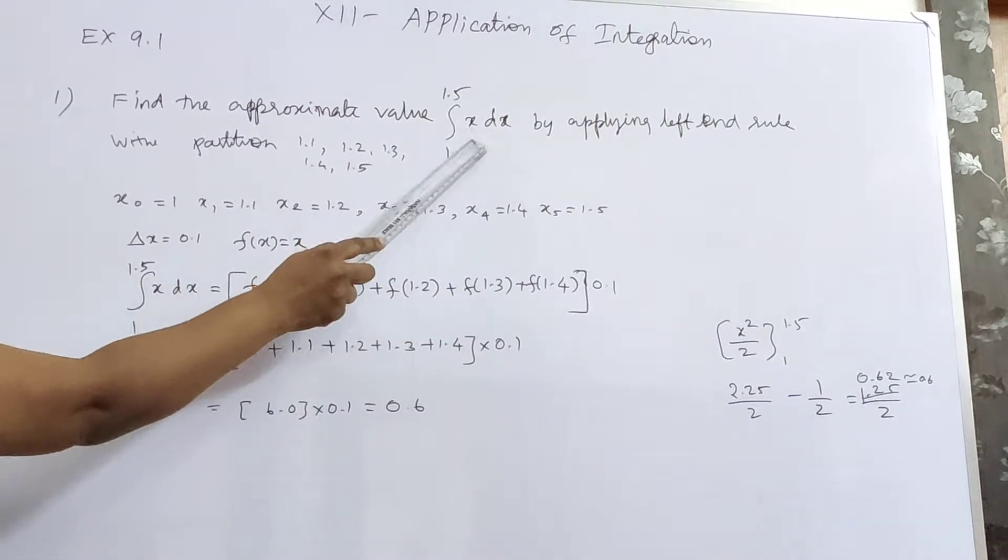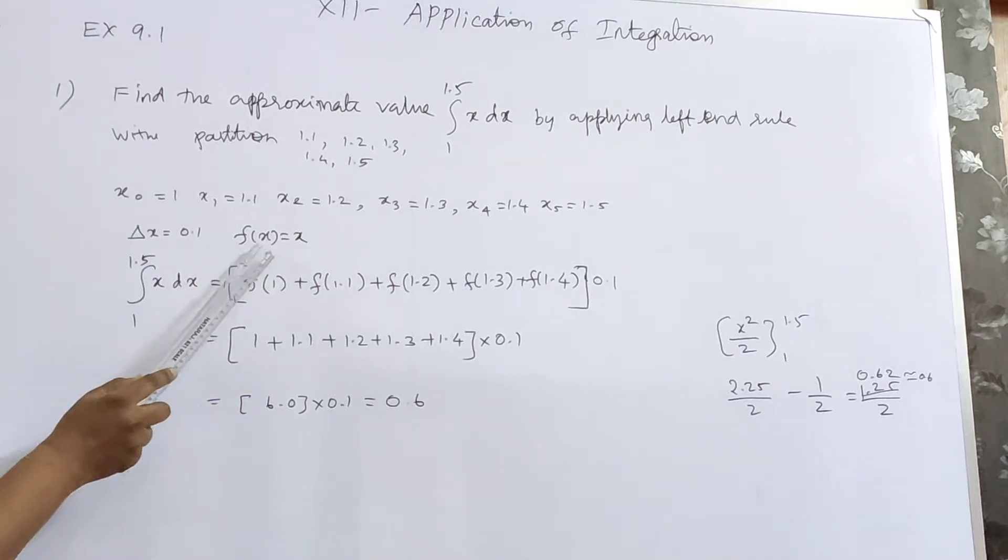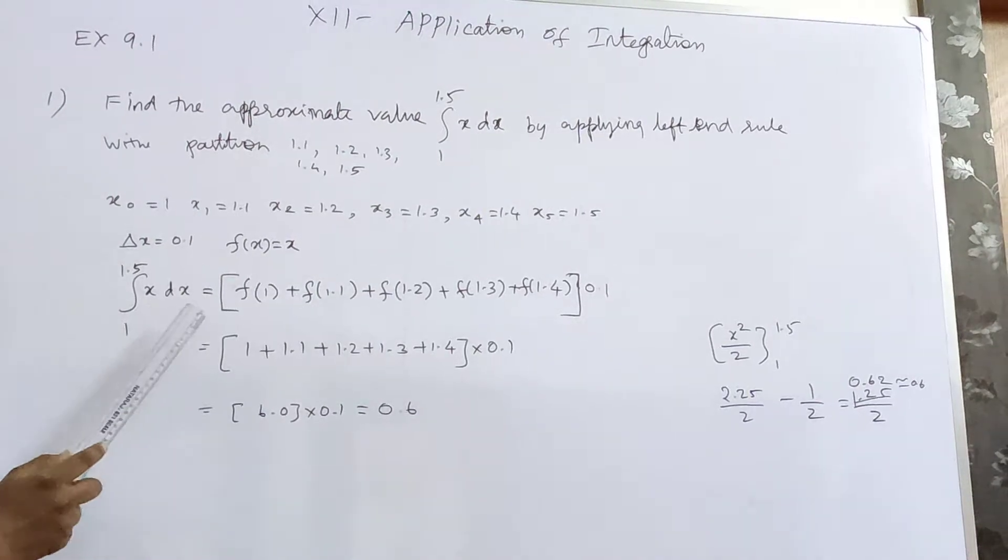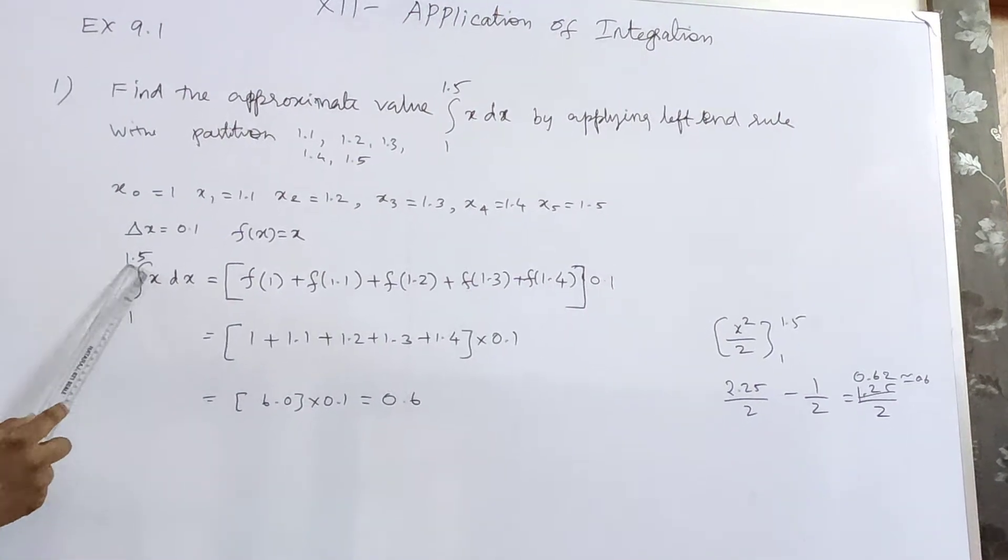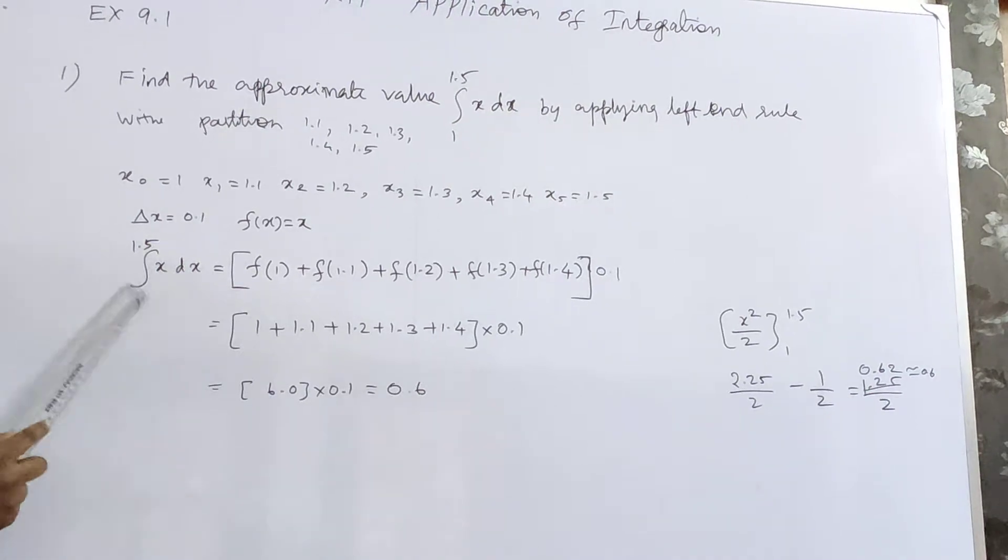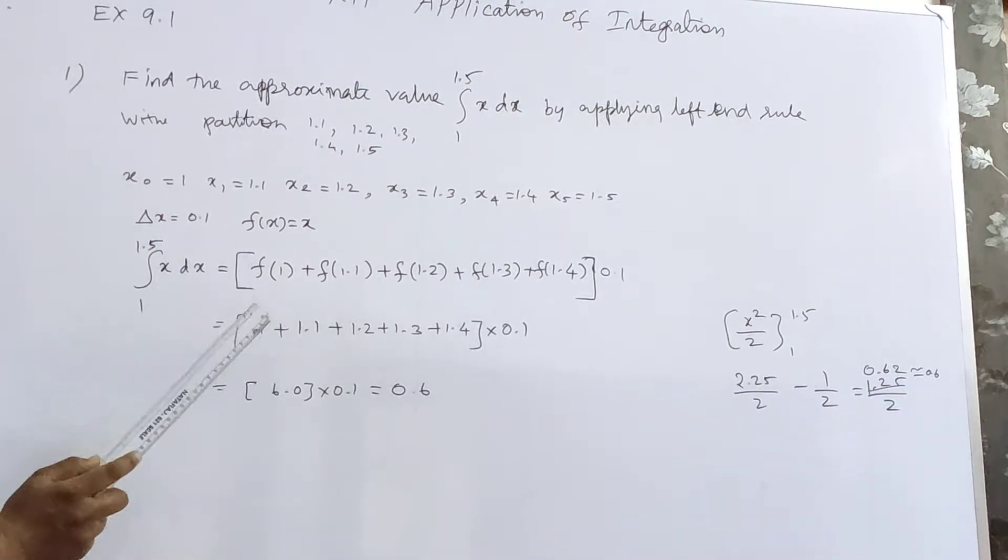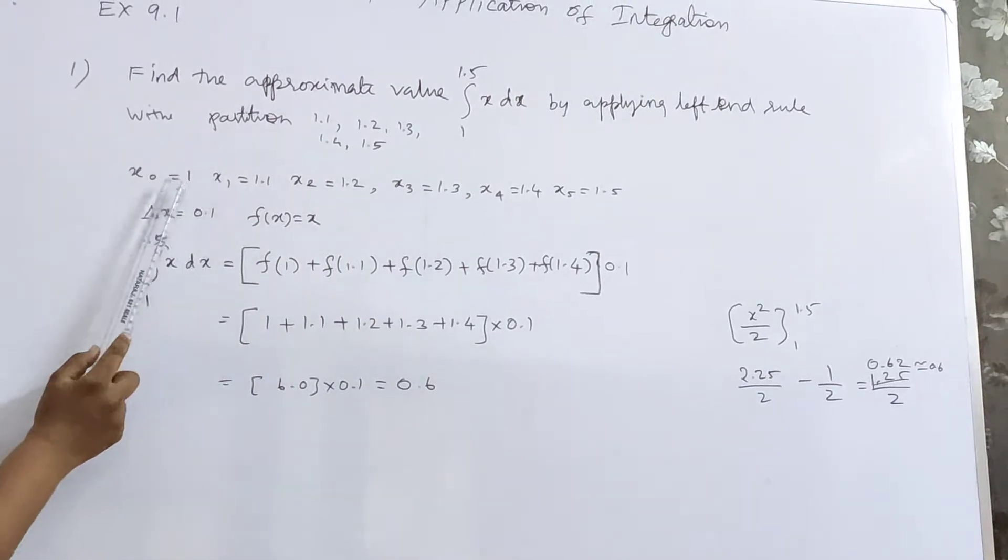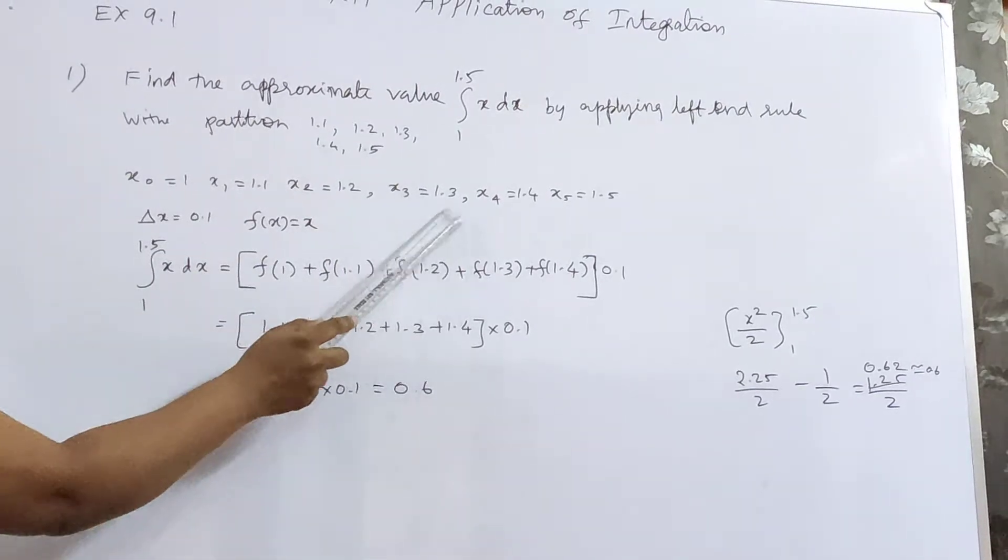f of x is the function which will be x. So for the integral 1 to 1.5 x dx, the approximate value we want to find using left-hand rule, there are 5 intervals: 1, 2, 3, 4, 5.